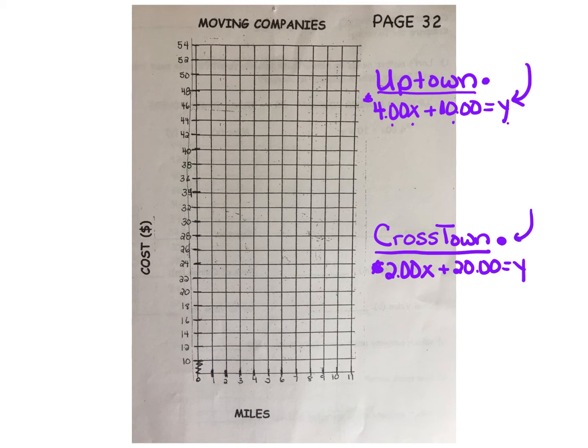And for Crosstown, we have $2 times every mile x plus $20 for a deposit equals y.